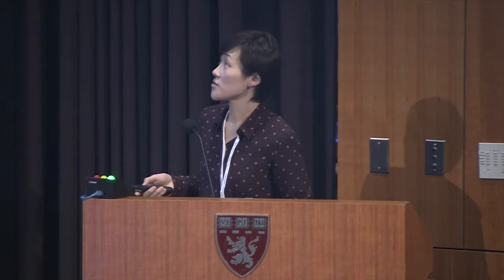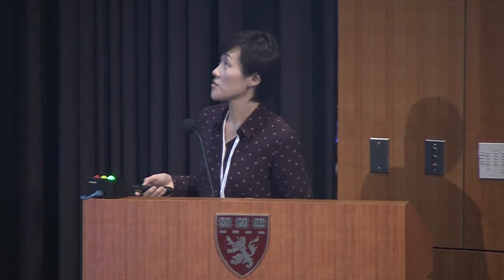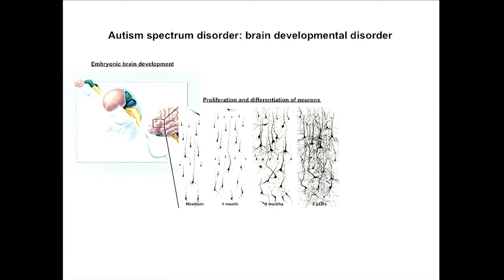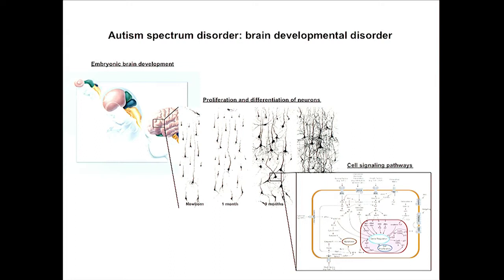During embryonic development, our brains go through immense morphological changes. During these changes, it is critical that the number of neurons that are made, their location in the brain, and the connections they make with each other are tightly regulated. This is governed by many complex cell signaling pathways, and autism is thought to be caused by dysregulation of one or more of these pathways.